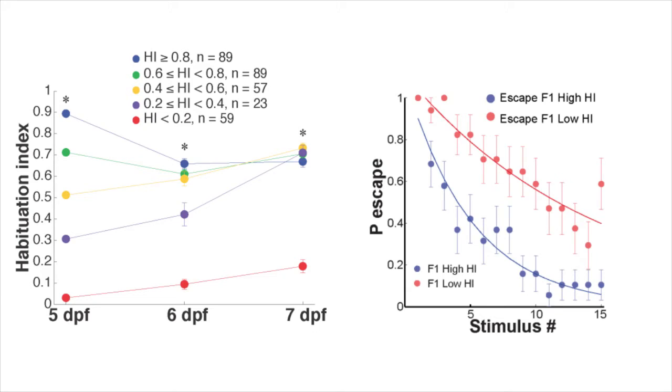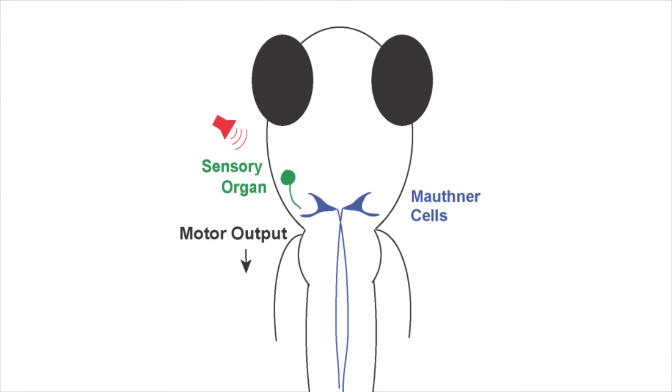We then wondered if this variability could be due to differences in the firing properties of the neural circuitry involved in the startle response. Acoustic stimuli activate sensory organs that send inputs that converge in two giant neurons called Mauthner cells. In fact, a single action potential in a Mauthner cell elicits the full startle behavior. We wondered if the firing properties of the Mauthner cells were different in fish with different personalities.